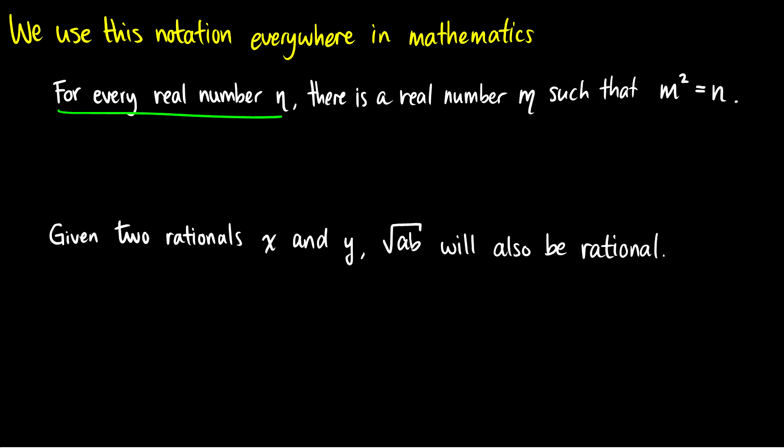So for every real number n, for every number, this is the universal. So we're going to have for all n, and these are real numbers. So for all n in the set of real numbers, so again for all n in real numbers, you should remember this from set theory, there is a real number m. So there is a real number m. There is at least one, so that's the existential. So there exists an m in the reals such that m squared is equal to n.